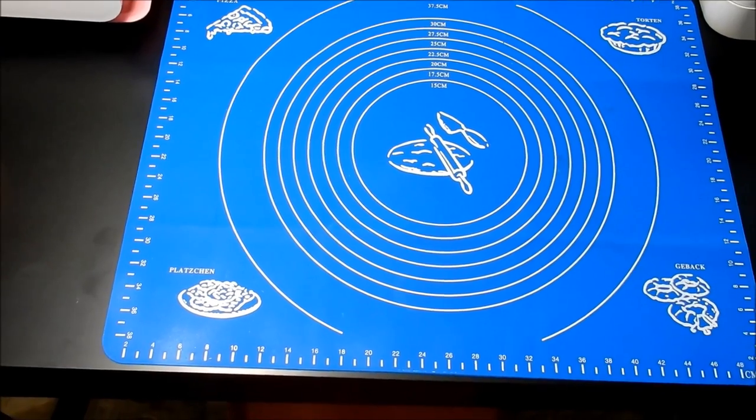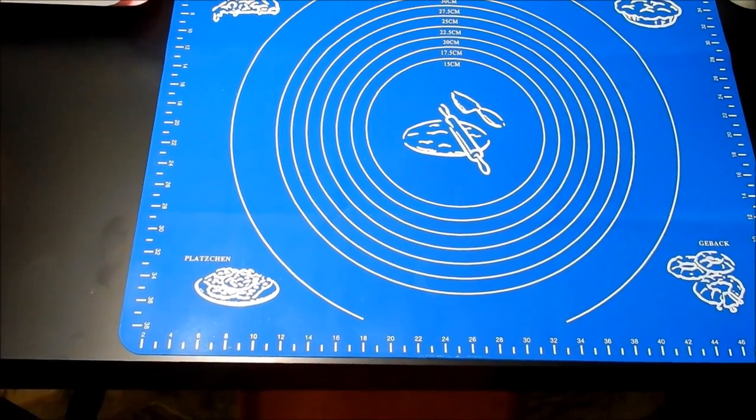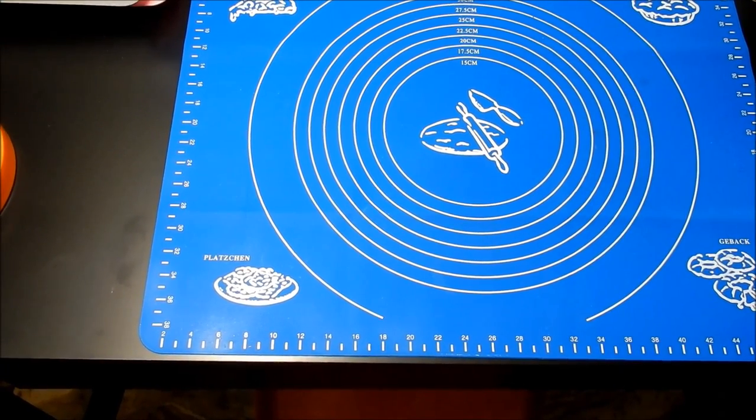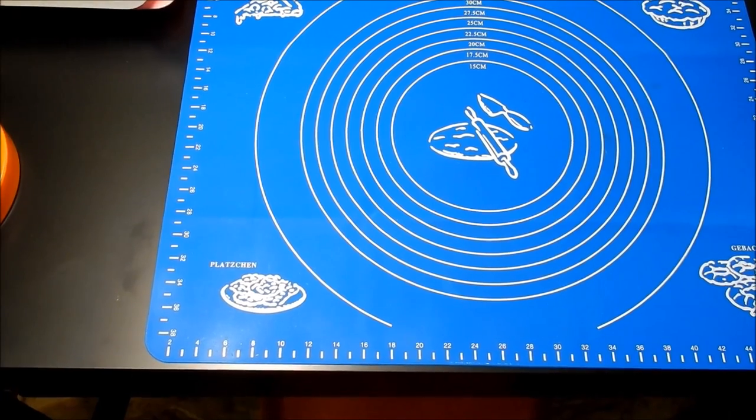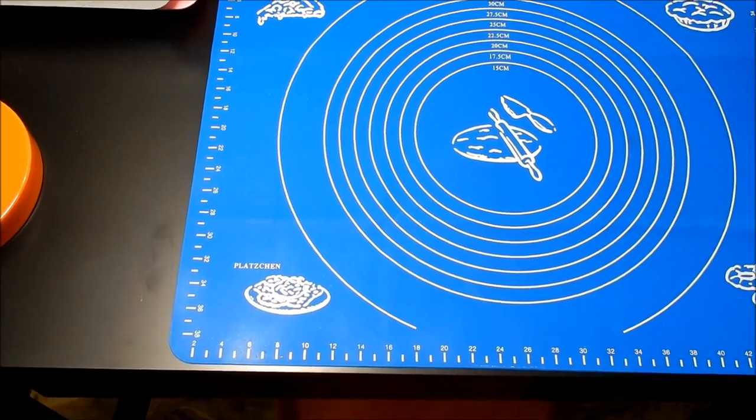I bought it off of a U.S. seller and it was $6.89, free shipping. It was the large silicone pastry mat and it came very fast. I bought it like September 3rd and I got it on the eighth.